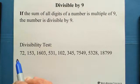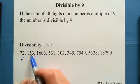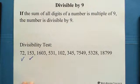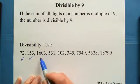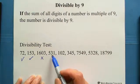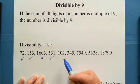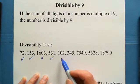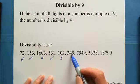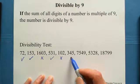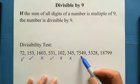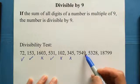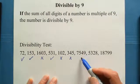For 72: 7 plus 2 equals 9 — so it's divisible by 9. For 153: 1 plus 5 plus 3 equals 9 — divisible by 9. For 631: 6 plus 3 is 9, but there's a 1 remaining, so this is not divisible by 9 — the digit sum is 10. For 531: 5 plus 3 plus 1 equals 9 — divisible by 9. For 123: 1 plus 2 plus 3 equals 6 — not divisible by 9. For 453: 4 plus 5 is 9, but there's another 3 — so not working for 9. For 7549: looking at 9, it's working, but 5 plus 4 gives 7 remaining — so it's not working.